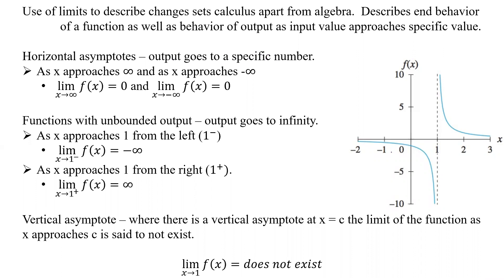If we look at our graph, a horizontal asymptote would be y equals 0, because we can see that the function goes down and approaches 0 but never reaches it. As we approach negative infinity for x, we approach 0 but never reach it.